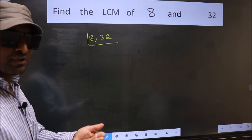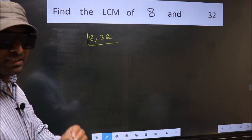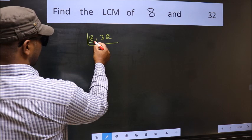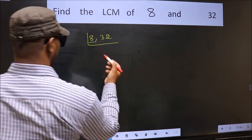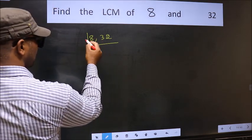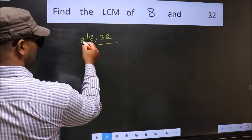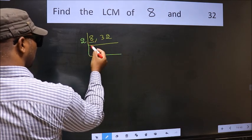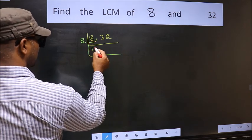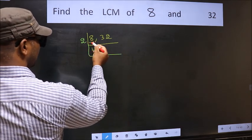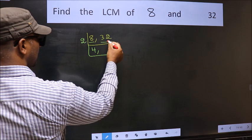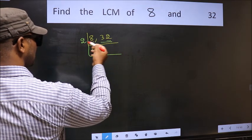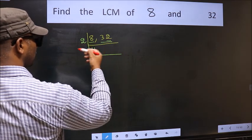Now you should focus on the first number which is 8. 8 is an even number, so take 2. When do we get 8 in the 2 table? 2 fours are 8. Now the other number 32 — last digit 2, even. So this number is divisible by 2.